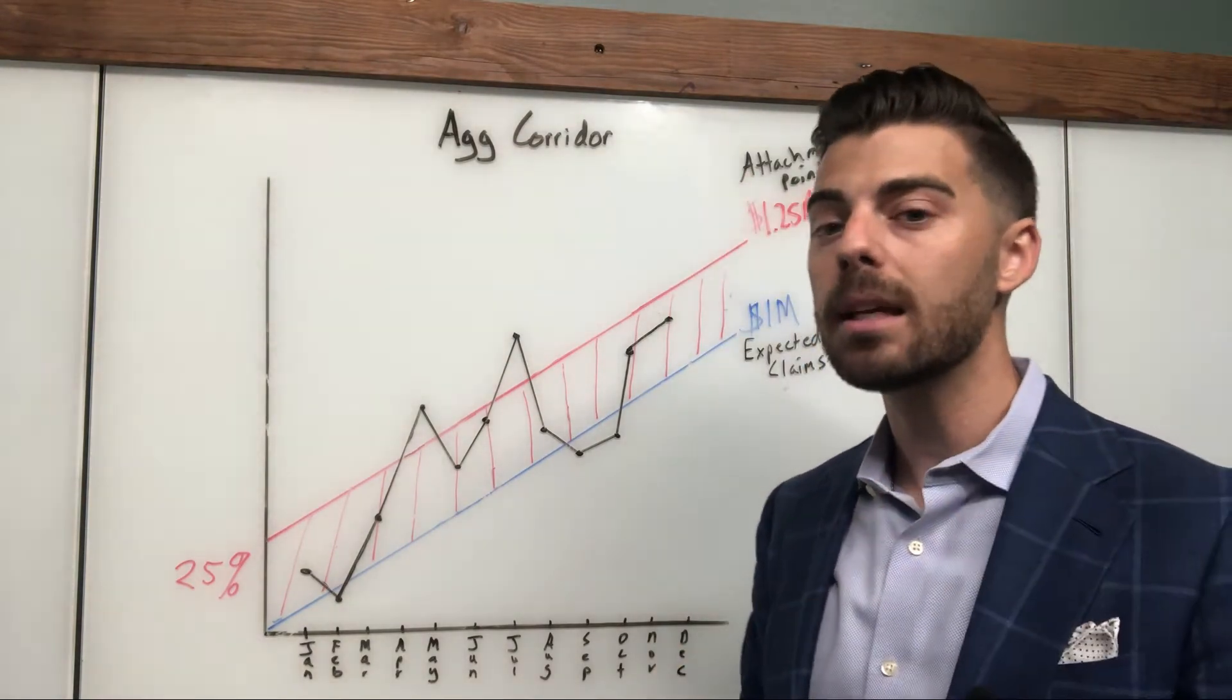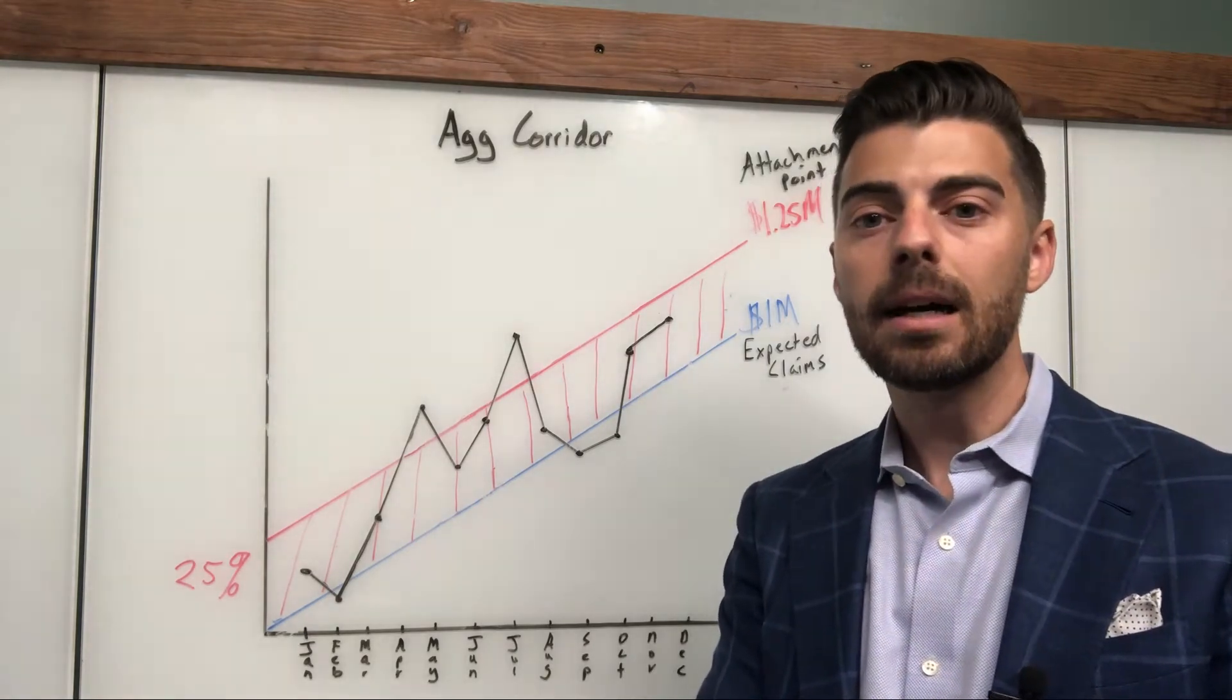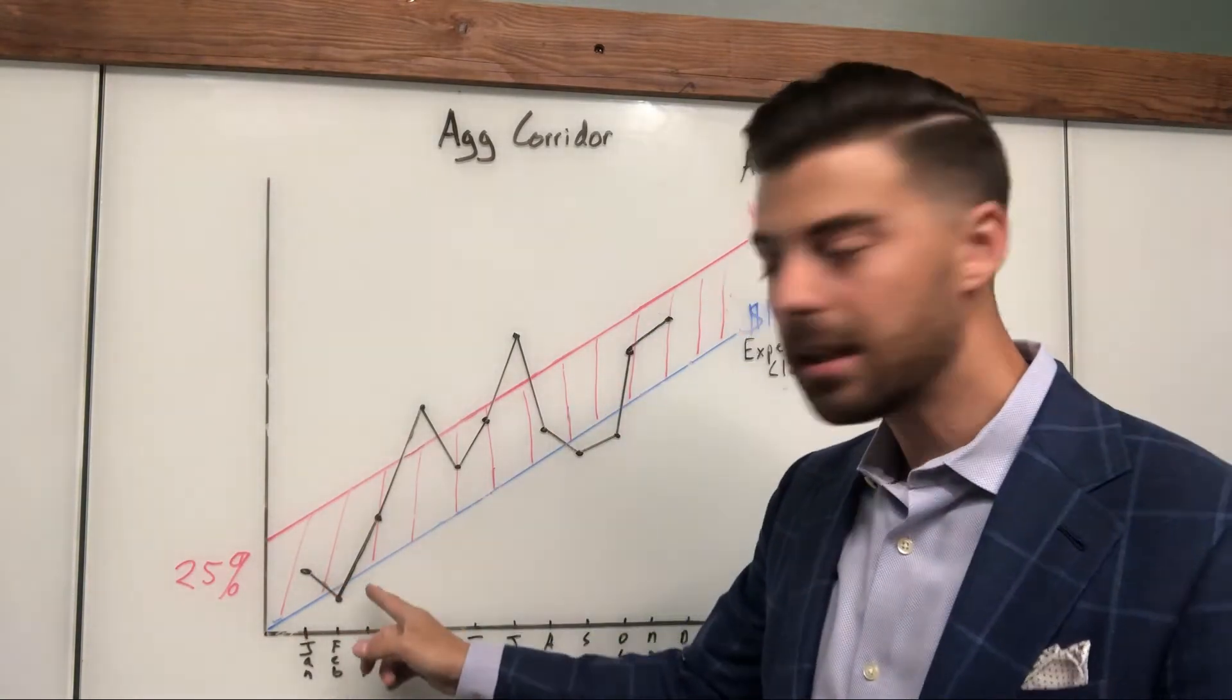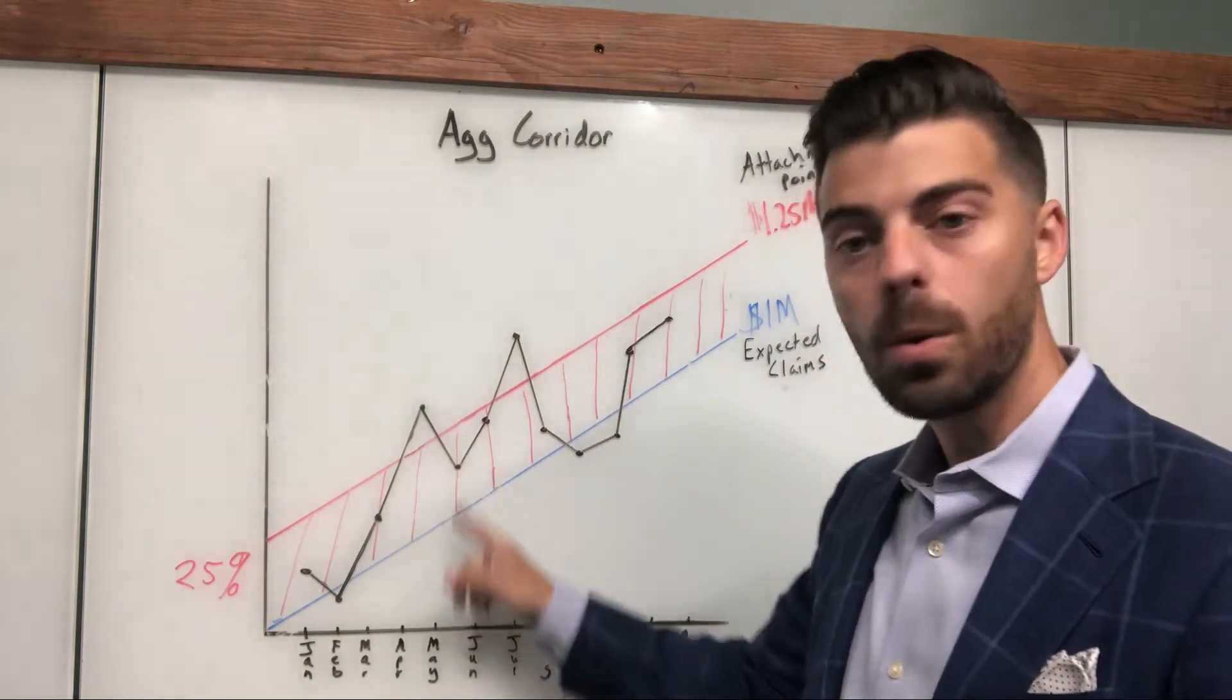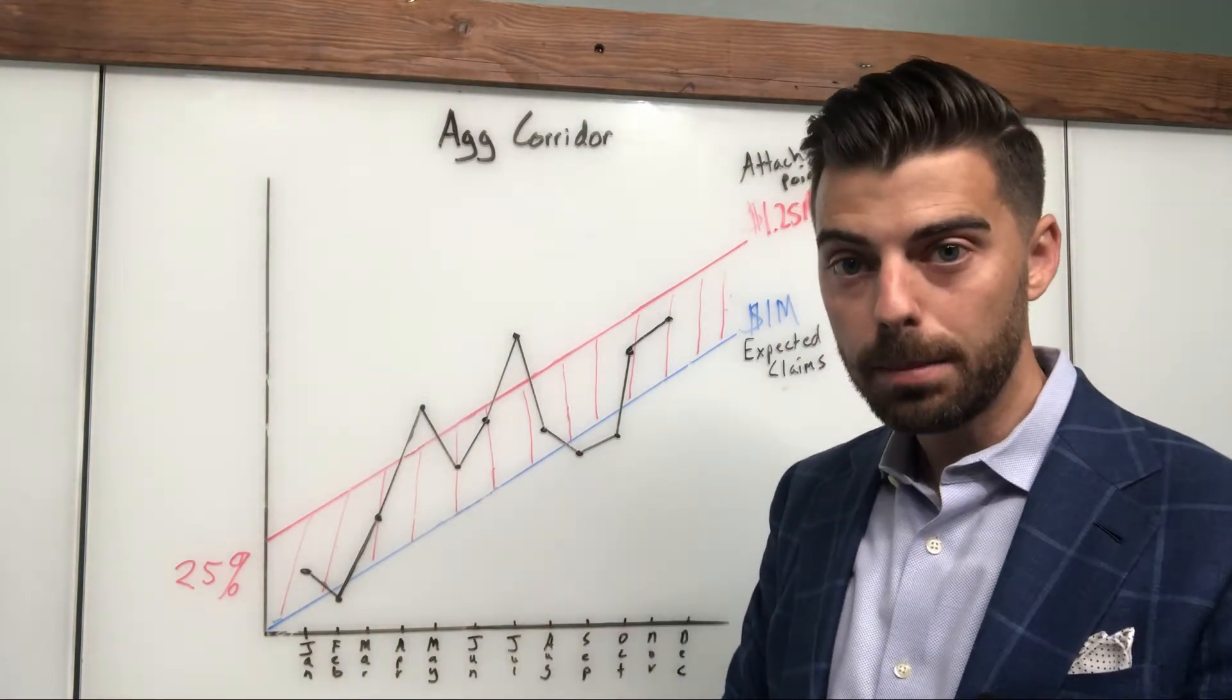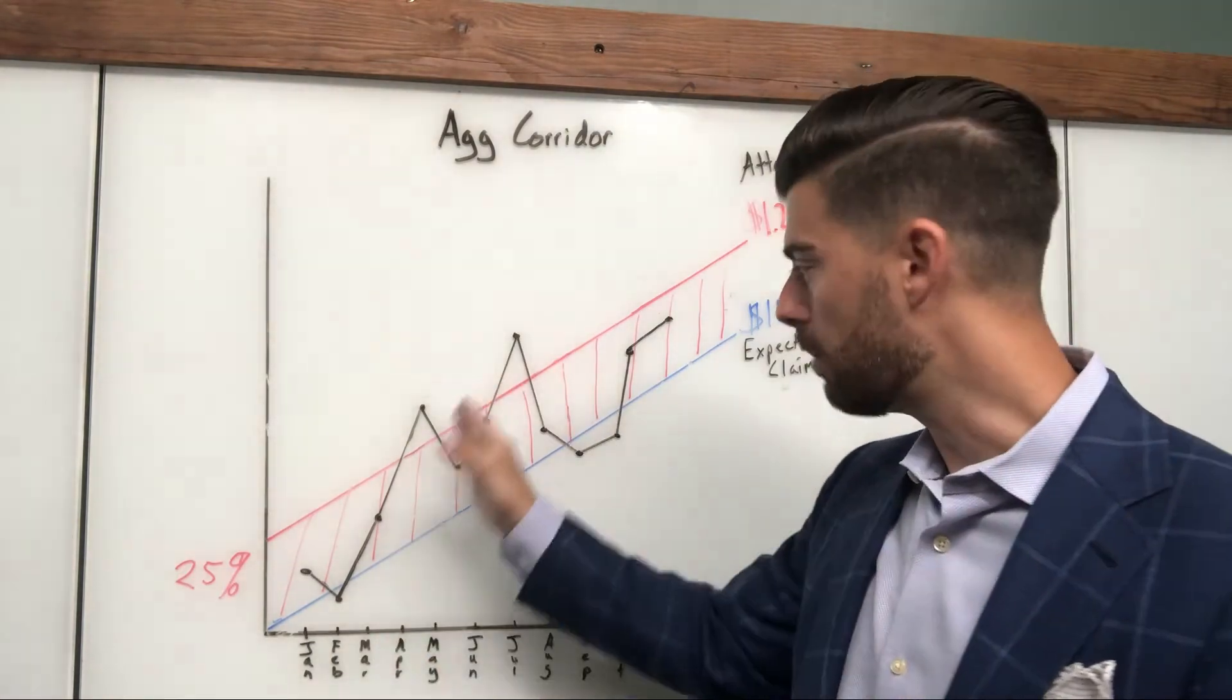The reason they give it to you monthly is headcount fluctuates month to month. There also is something that can come into play theoretically called the minimum attachment point, which we won't get into today. But the reason I've got it plotted monthly is because, as claims come in, they don't follow a linear trend. There's going to be fluctuation month to month. That's where specific stop loss helps you for that wild, crazy claim per individual, and then aggregate helps you with these monthly fluctuations.